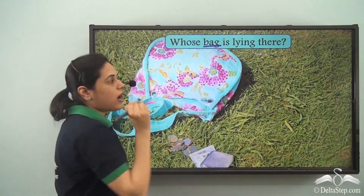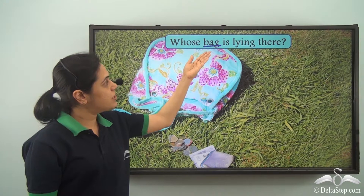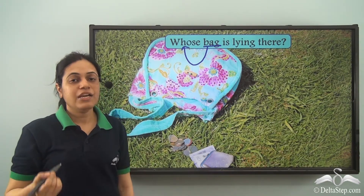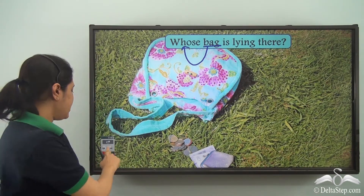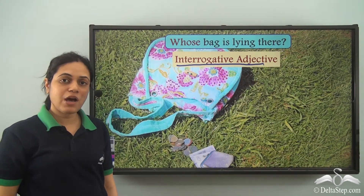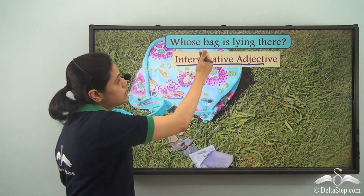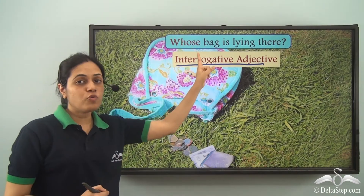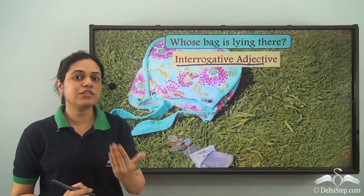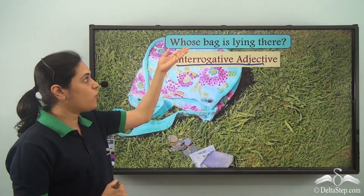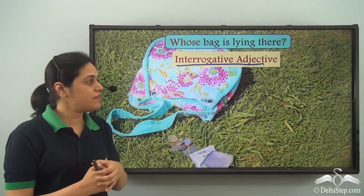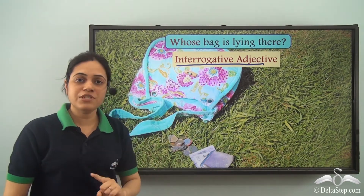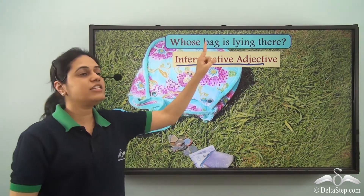Next example: 'Whose bag is lying there?' Bag is the noun, and the word whose is giving us more information about the noun and also asking a question. So it is an interrogative adjective. Interrogative adjectives describe a noun or pronoun and also ask a question. You should remember that here whose is asking a question, not giving an answer, so do not confuse it with a possessive adjective — possessive adjectives give the answer to the question whose, while interrogative words are used to ask questions.